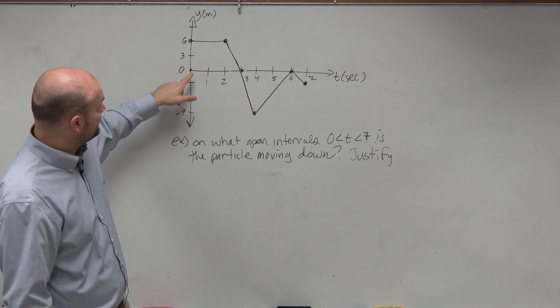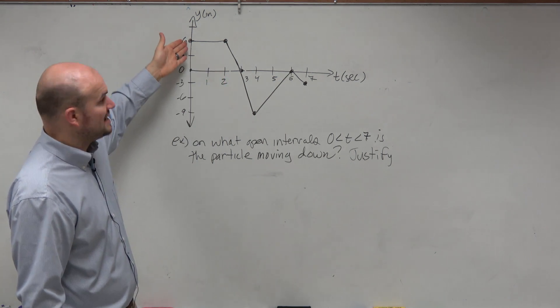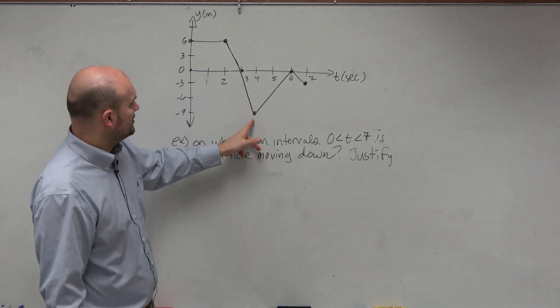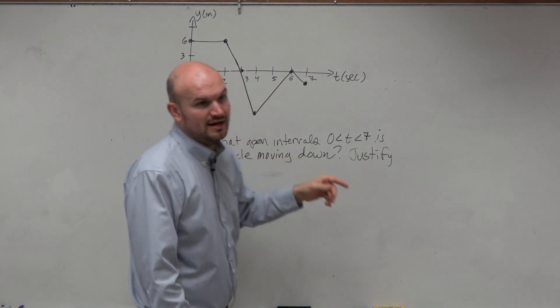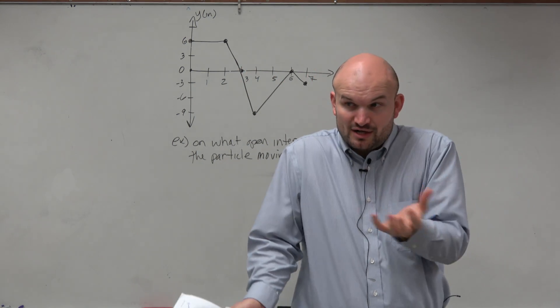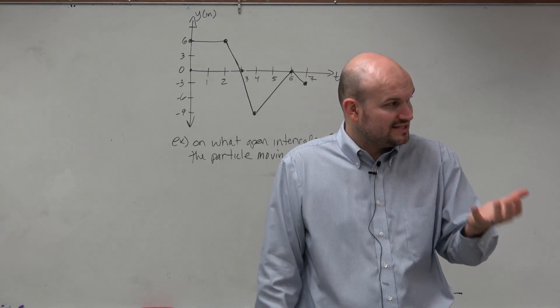So from the interval from 0 to 2, this particle is at 6 inches. And at the interval at t equals 4 seconds, the particle is now at negative 9 inches. So it's not the path. It's just showing where this particle is at certain periods of time.